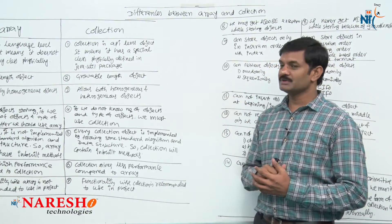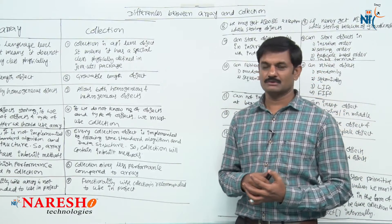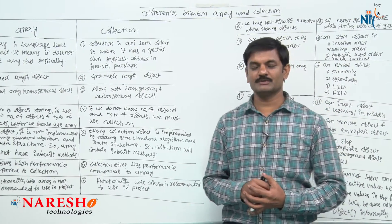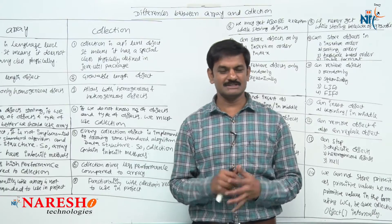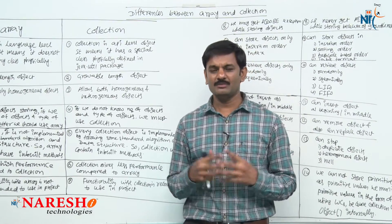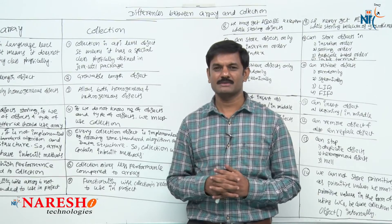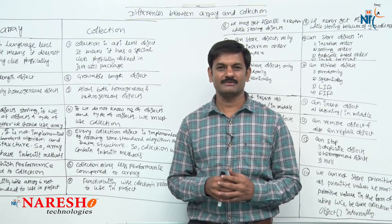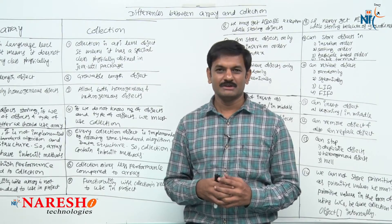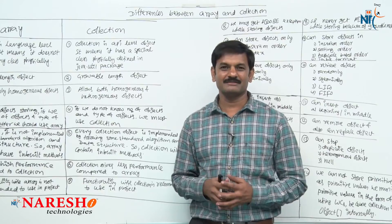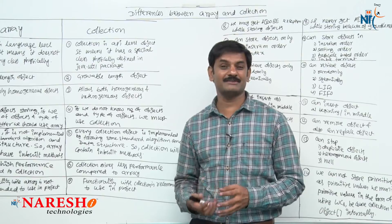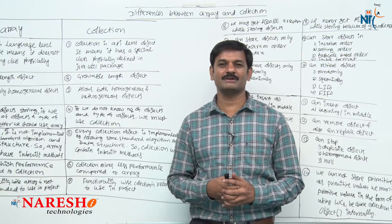There are several differences between array and collection. I have listed out a total of 14 differences. All 14 points are very important — these are the maximum differences we have between array and collection. How can you remember them? You cannot carry any book to the interview room. If asked to tell the differences between array and collection, you cannot open a book.